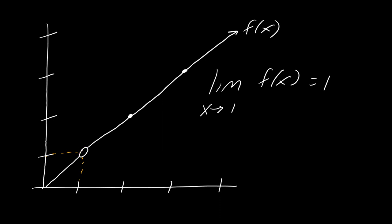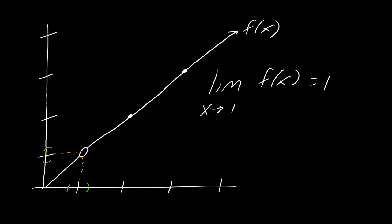Looking at this particular graph, one way we could think about this: I know there's a hole here, so this function does not exist at x equals 1, but I feel pretty confident that around this limit everything exists around this point. So if I could illustrate how I can get close enough and get into a region around this point, then maybe I could feel a little bit more confident about my limit. And that's actually the exact game we're going to play, except more precisely now.